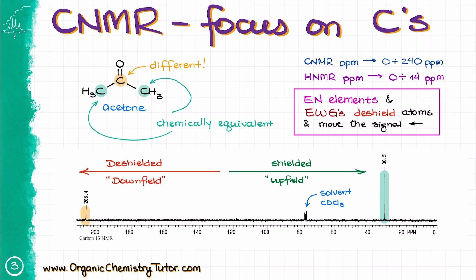An important thing to remember here is that the electronegative atoms and electron withdrawing groups deshield our carbons and move their signals to the left. And that's why our orange carbon is all the way to the left at 206 ppm, as it is right next to the electronegative oxygen in the molecule.